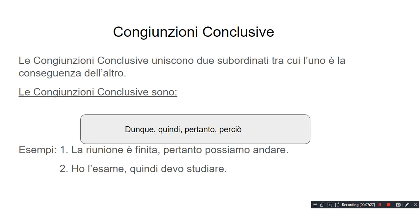Congiunzioni conclusive — conclusive conjunctions. Le congiunzioni conclusive uniscono due subordinati, tra cui l'uno è la conseguenza dell'altro — these conjunctions combine two subordinates, among which one is the consequence of the other. Le congiunzioni conclusive sono: dunque, 'therefore'; quindi, 'so'; pertanto, 'thereby'; perciò, 'that's why'.